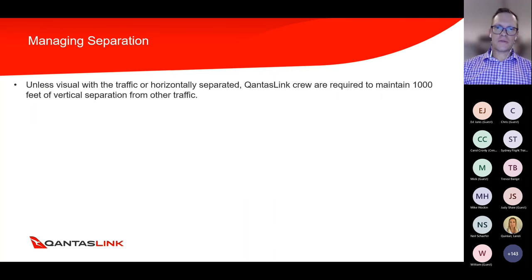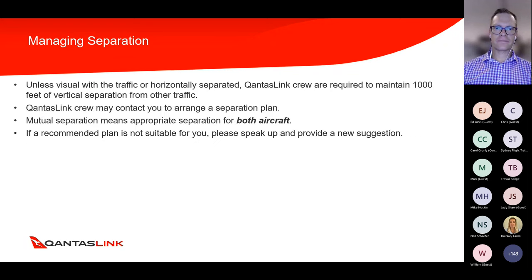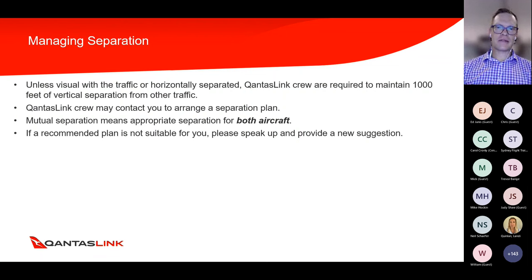For managing traffic separation at QantasLink, unless we have the other aircraft visually sighted or we've worked out horizontal separation, we require our crew to maintain 1,000 feet as a minimum vertical separation from other traffic. You might hear our crew contact you on the CTAF to come up with a separation plan. We don't want our pilots to be air traffic controllers — it's just about suggesting a plan and checking if it's suitable for you. If our crew asks whether a particular altitude is appropriate and you think it'll get you too close to terrain or cloud, speak up and come up with a new plan. If we all work together on the radio to come up with some sort of separation plan, that's in everyone's interests.